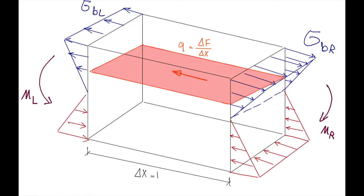We cut part of the element horizontally at a red plane and consider the top portion of the beam. The stresses acting on the right and left are unequal because the bending moment is not the same. That unbalanced stress produces an unbalanced force on the red plane, called delta F. For a unit length delta X equal to one, we call that shear flow, which is the main thing producing shear stress in beams.